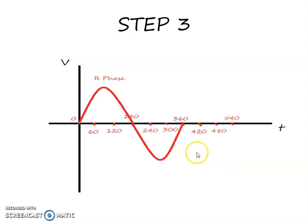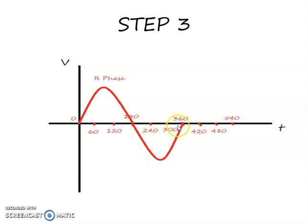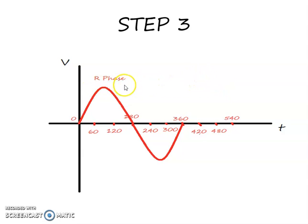The next step is to draw the first waveform starting from zero, going to a peak at 90 degrees, reaching zero at 180 degrees, going to a negative peak at 270 degrees, and reaching zero again at 360 degrees. This waveform is a single sine waveform which we refer to as the R-phase waveform.